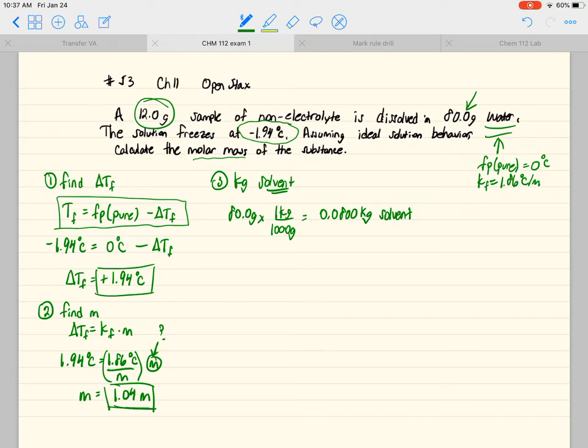Now we know molality and we know the kilograms of solvent, so we just want to find moles. Here's the formula we're going to be using: the molality is 1.04 that we calculated before, and we don't know the moles, but we do know the kilograms, it's 0.0800. So the number of moles we have here: 1.04 times 0.0800 equals 0.0832 moles.